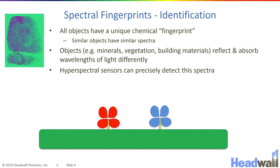This is easy for us to comprehend if we think about things like red or blue flowers or green grass. When sunlight strikes a blue flower, it will reflect more of that blue light back to our eyes, and therefore the flower will appear blue. When sunlight strikes a red flower, it will reflect more of the red light back to our eyes and absorb more of the blue and the green light.